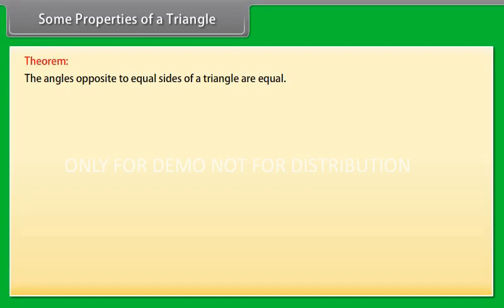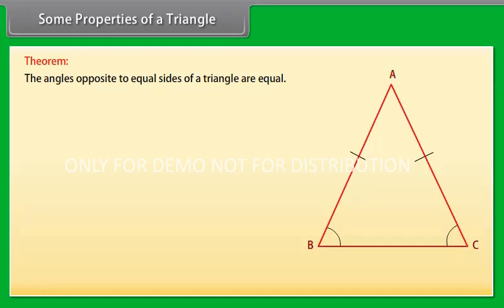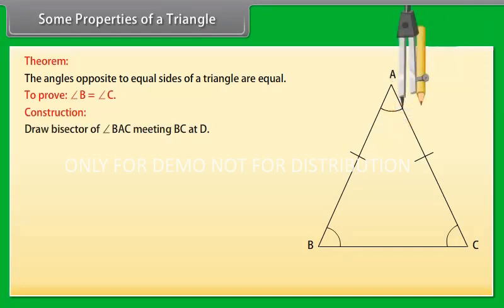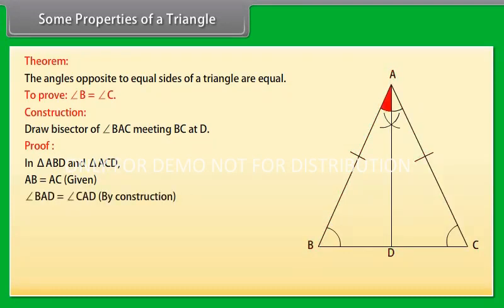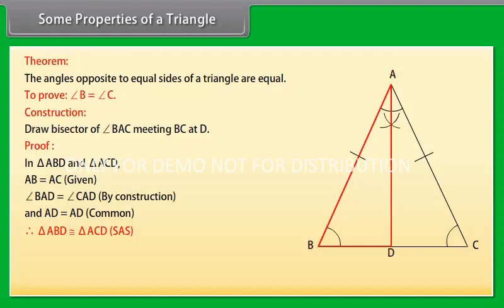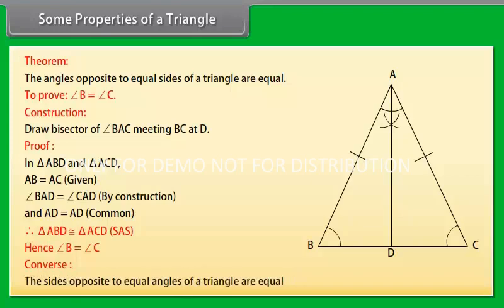Some properties of a triangle. Theorem: The angles opposite to equal sides of a triangle are equal. Let's prove it. Given is a triangle ABC in which AB equals AC. We have to prove that angle B equals angle C. Construction: Draw the bisector of angle BAC meeting BC at D. Proof: In triangle ABD and triangle ACD, AB equals AC (given), angle BAD equals angle CAD (by construction), and AD equals AD (common). Therefore, by SAS rule, triangle ABD is congruent to triangle ACD. Hence, angle B equals angle C. The converse of this theorem is also true: the sides opposite to equal angles of a triangle are equal.